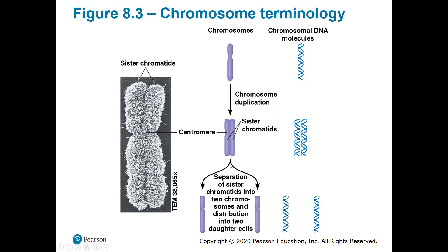Once you undergo mitosis, these sister chromatids will be separated into two different separate cells, resulting in identical daughter cells of the parent chromosome. This is a transmission electron microscope image of a sister chromatid showing the actual compact DNA molecules. The sister chromatids are connected at a spot called the centromere, which is just a region where these two DNA copies are connected together and held.